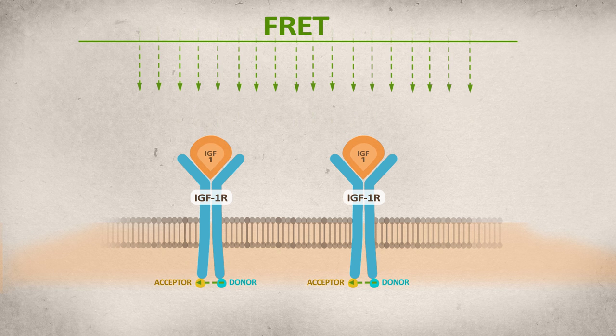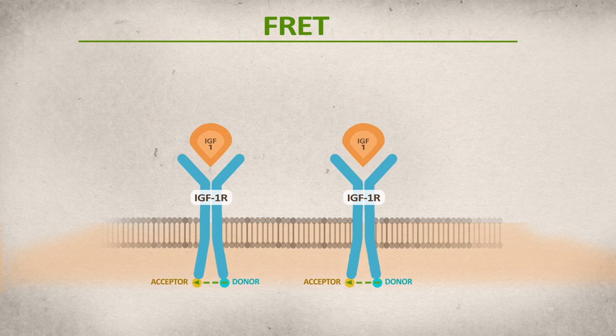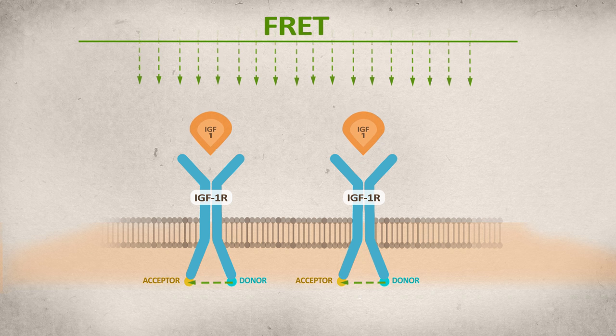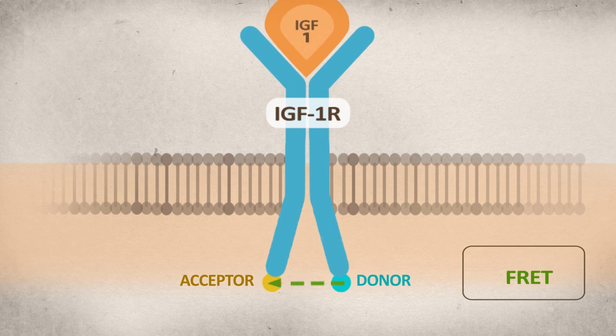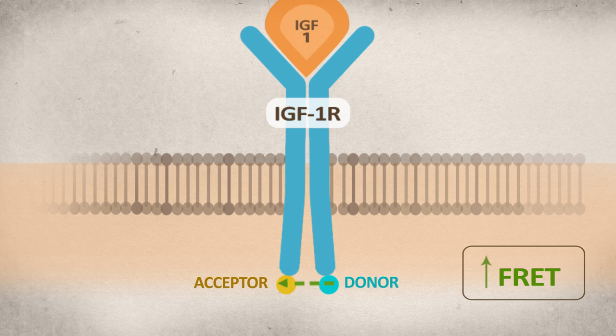Upon activation by IGF-1 ligand, the receptor homodimer undergoes conformational changes. These structural changes are reflected by increase in FRET. Correspondingly, decrease in FRET will reflect receptor inactivation.